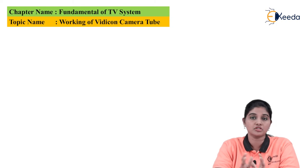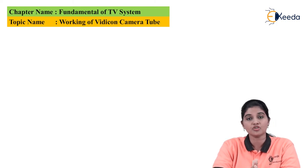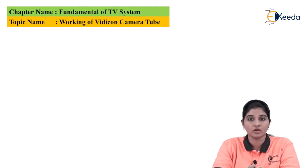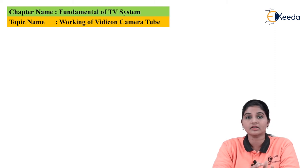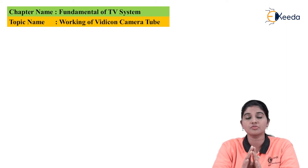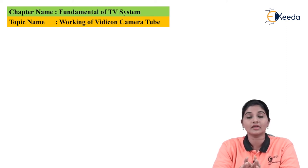Each camera tube operates on a different principle of operation. Image Orthicon camera tube operates on the principle of photo emission, whereas the Vidicon camera tube operates on the principle of photo conduction. Plumbicon is basically an extension or upgrade version of the Vidicon camera tube, so it also works on the principle of photo conduction but has a different target.